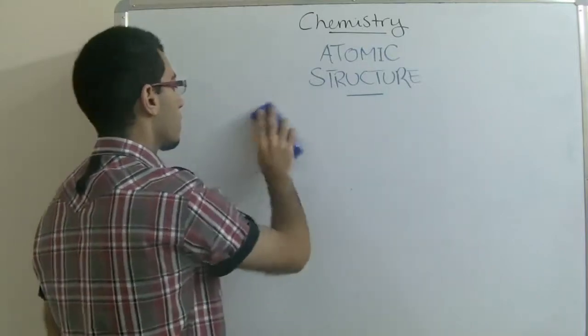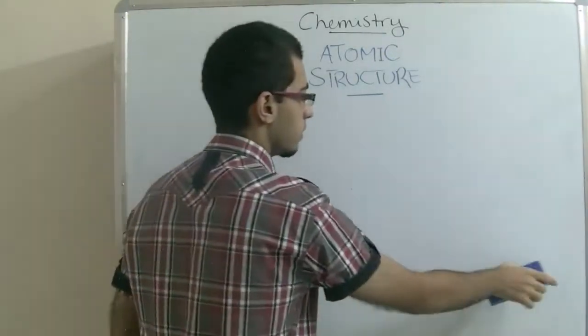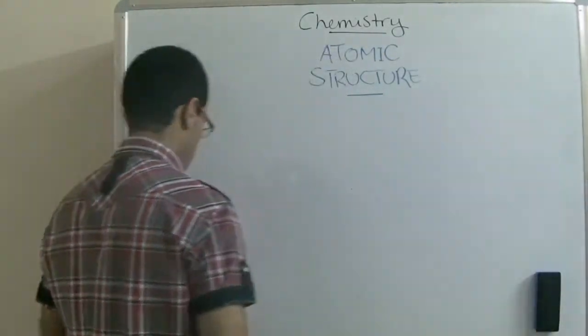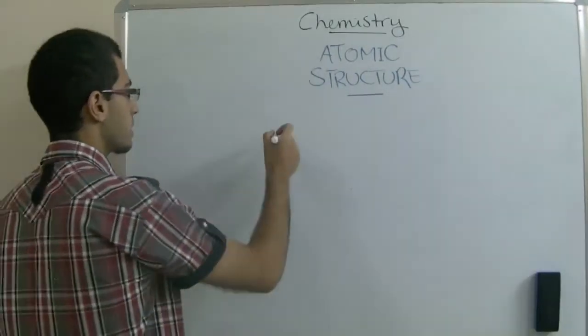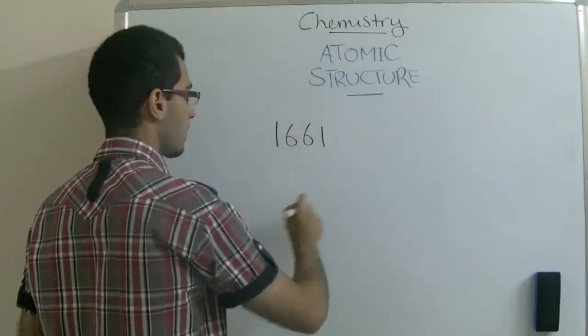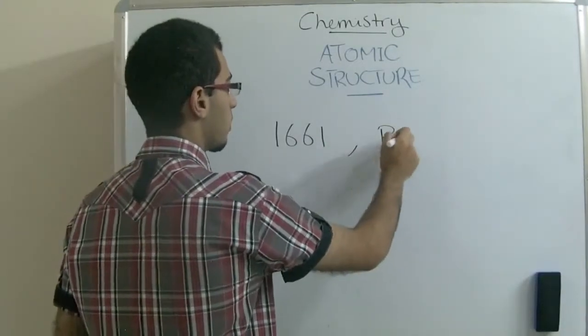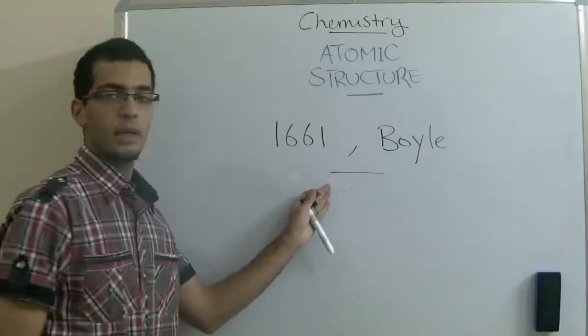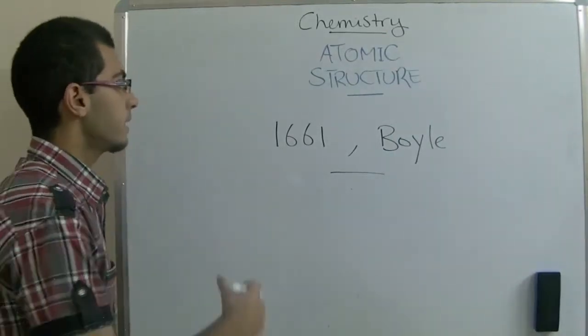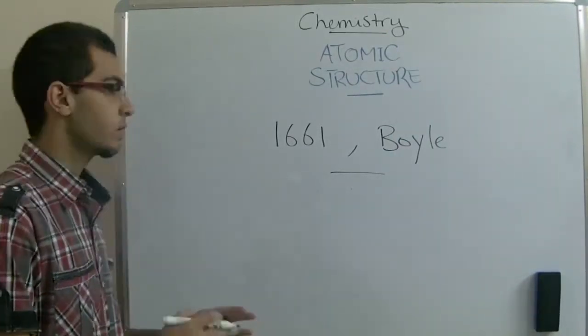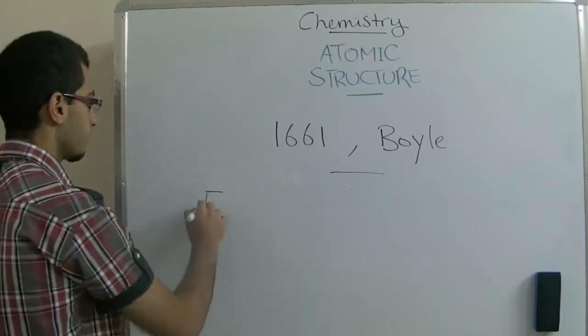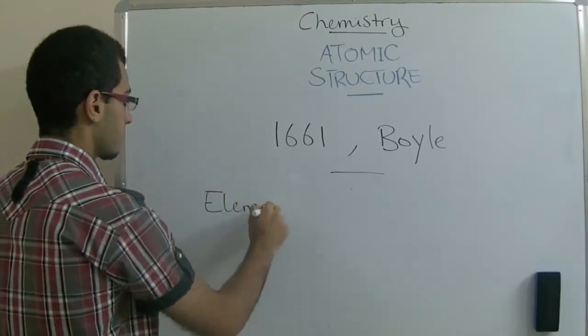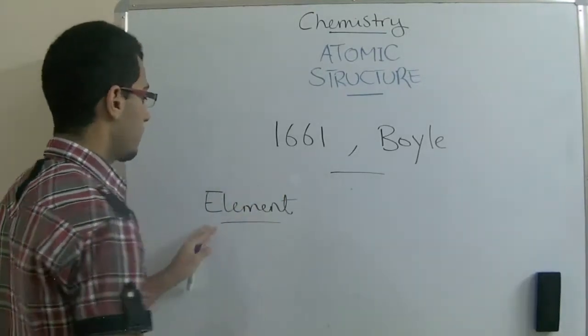In the year 1661, a scientist called Boyle rejected this idea of Aristotle. He gave the first definition of an element.